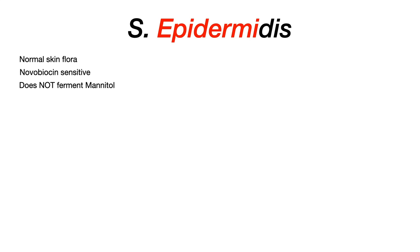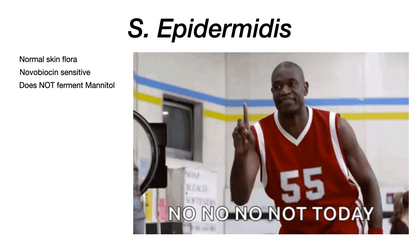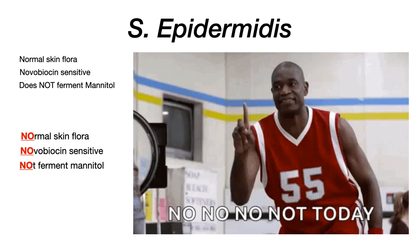When I think about hands and fingers, my first mnemonic comes from Dikembe Mutombo — a famous basketball player who was in a bunch of commercials where he would wag his finger and go: no, no, no, not today. The no, no, no part of that mnemonic reminds you of the three key facts about Staph epidermidis.